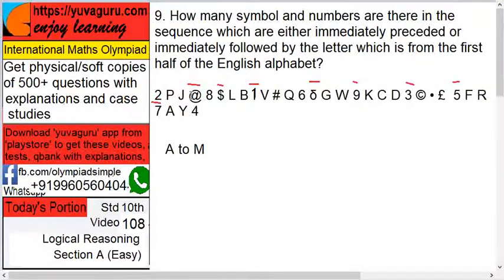First half of the English alphabet means A to M. It means that number or that symbol must be followed or must be following any one of the letters between A to M, including both.